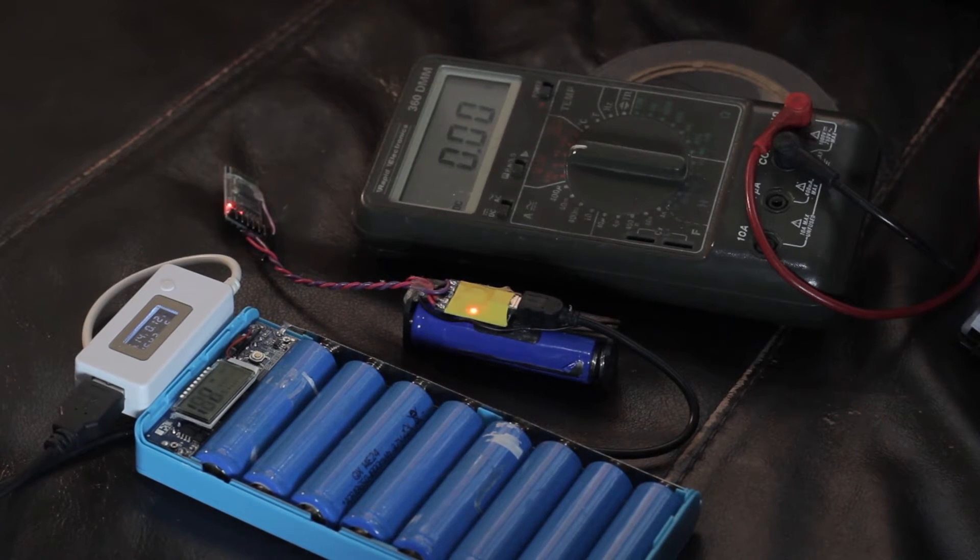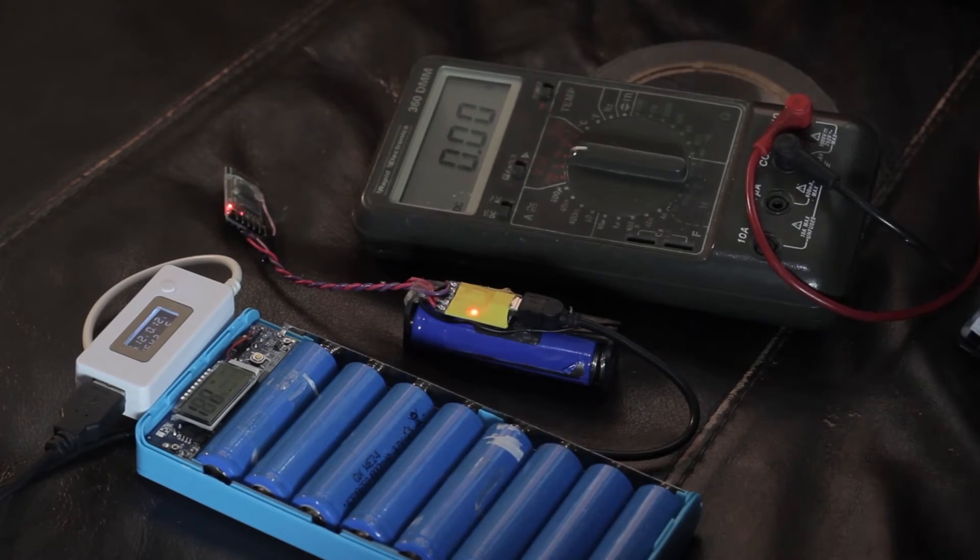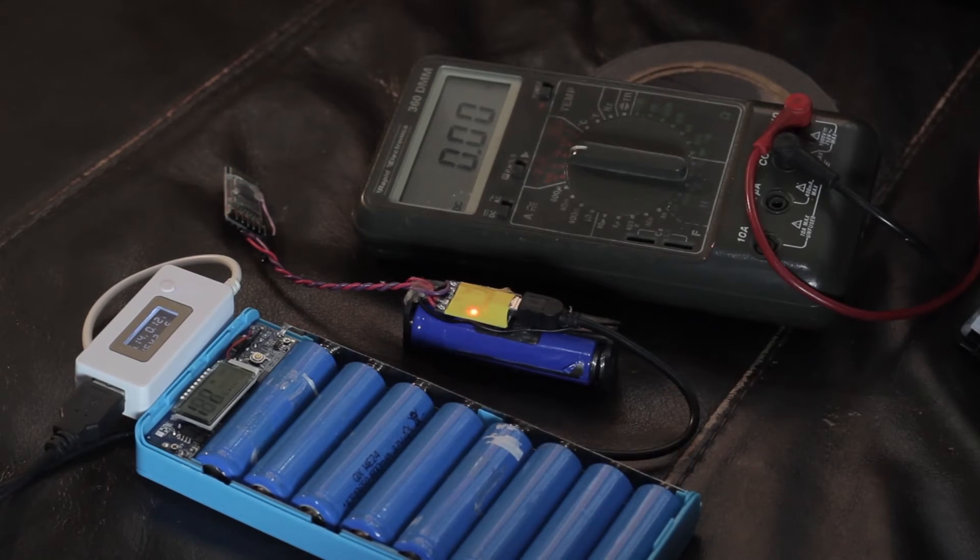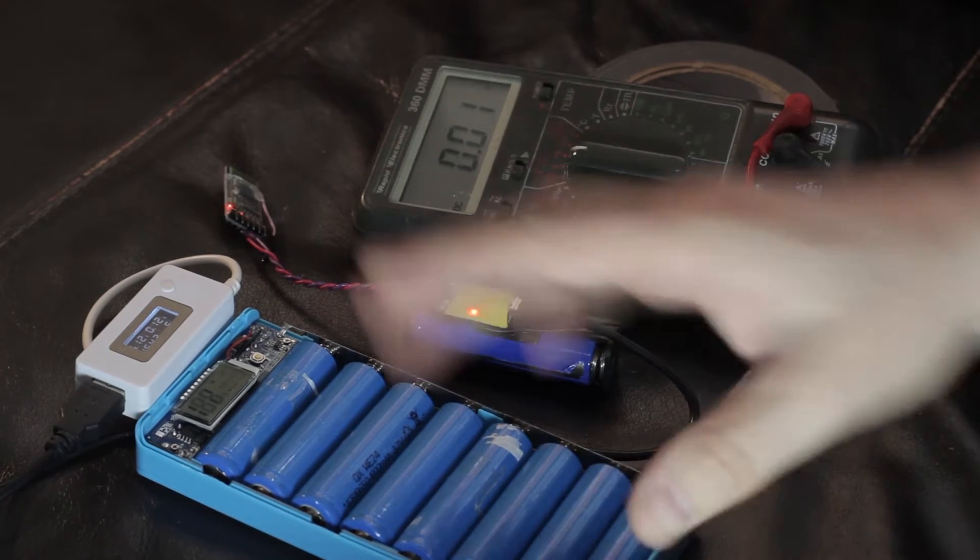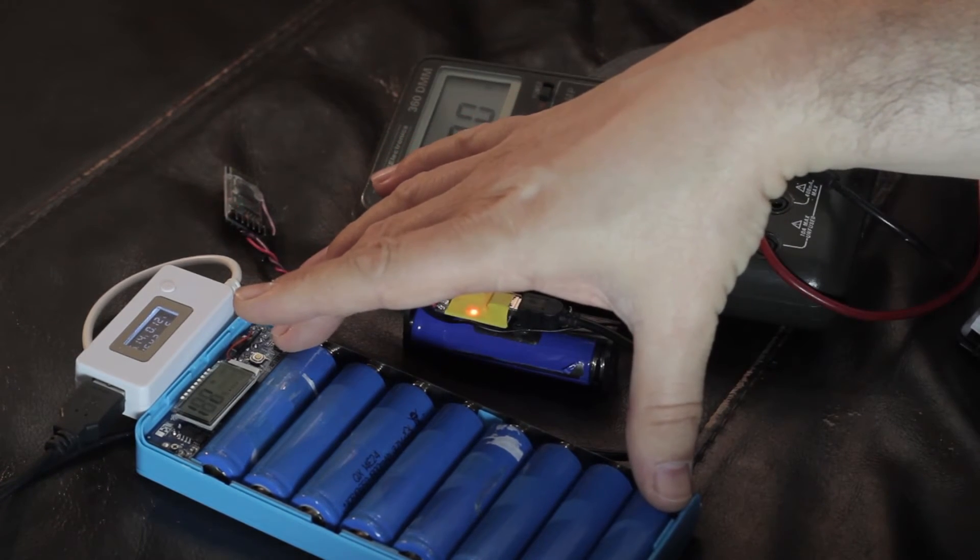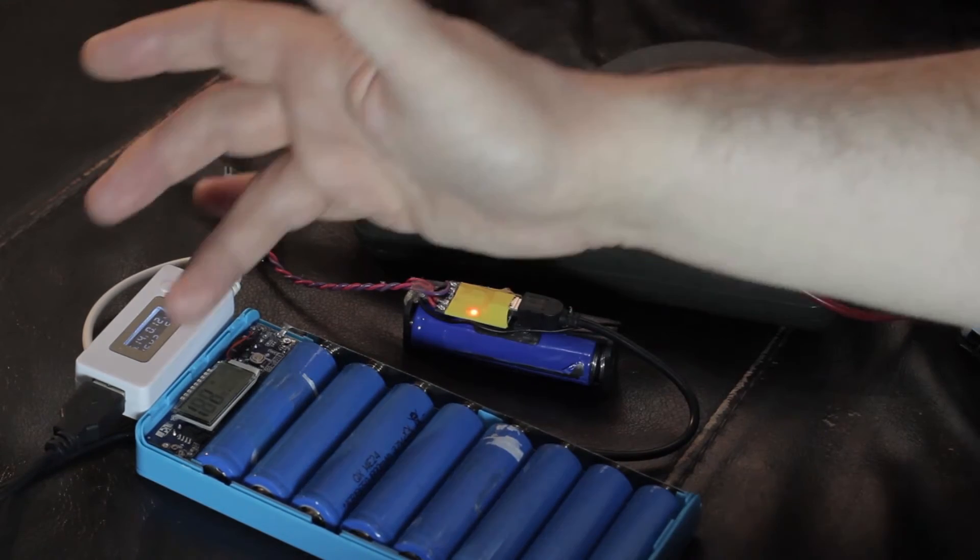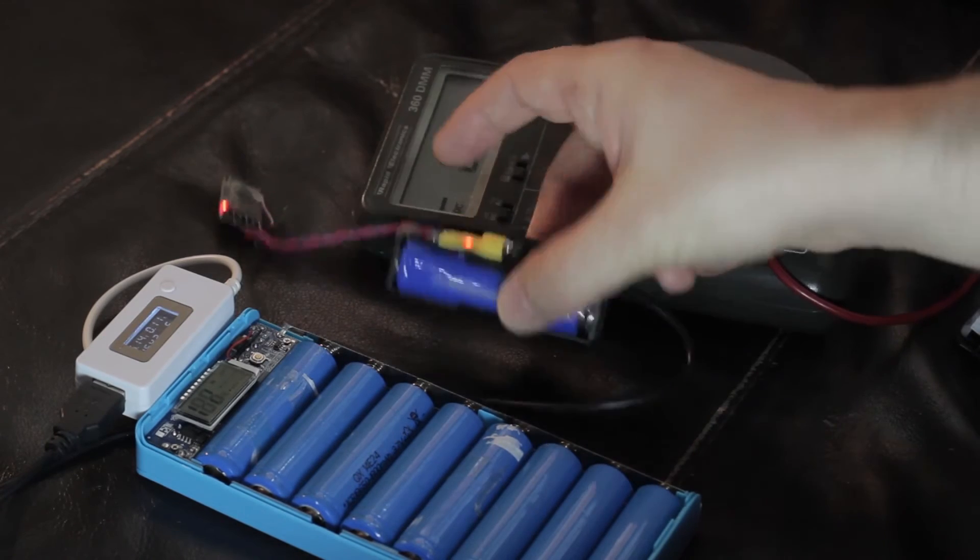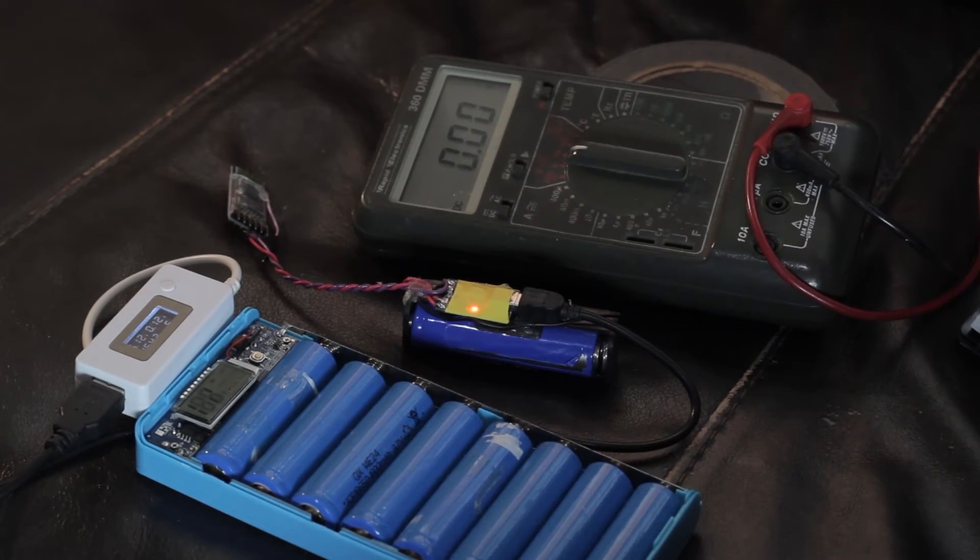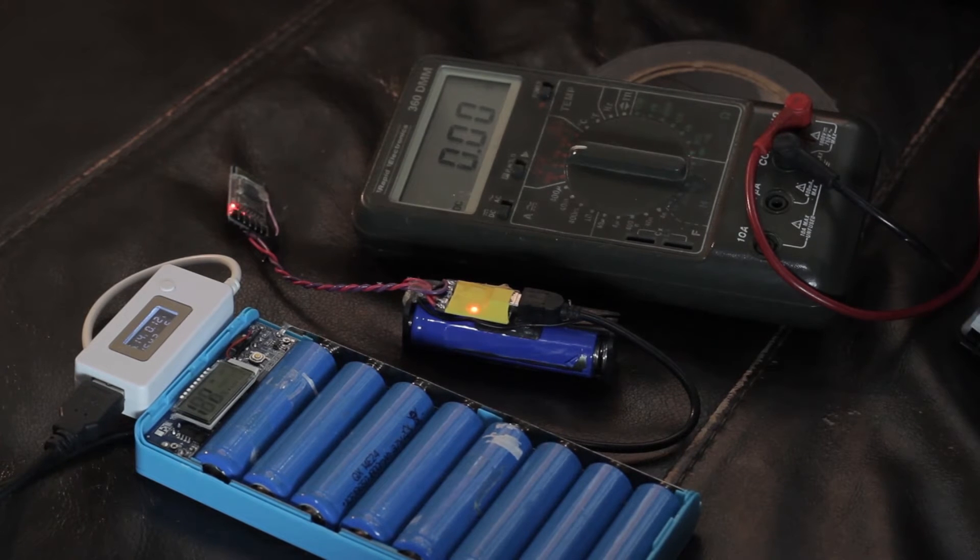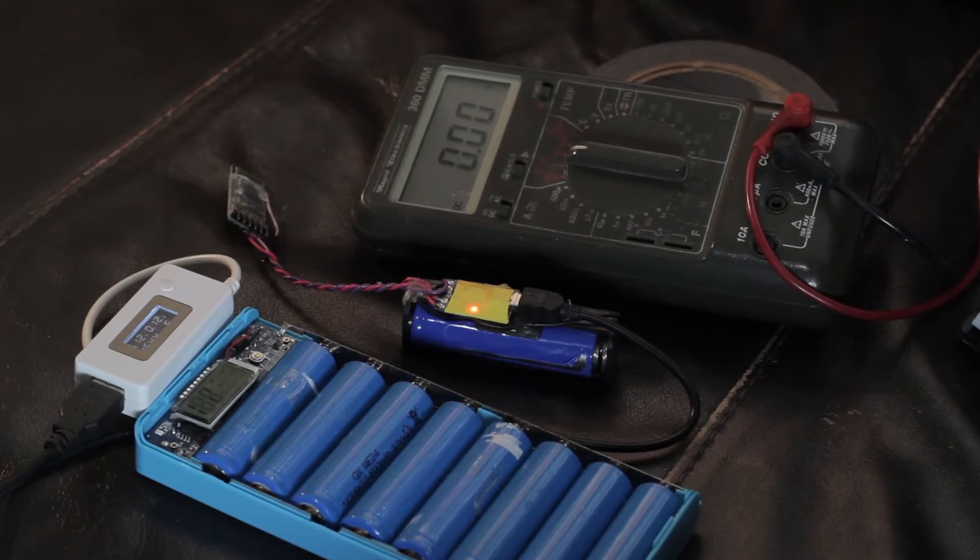So, some basic figures and things added up again there. We've got eight 1800 milliamp hour cells, giving us about 14 amp hour. And we've used 15% of it to charge this 1.3 amp hour cell. So there's definitely losses involved. We'll calculate them all out properly and more accurately later. But this gives you a guide.